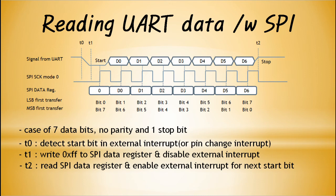When an interrupt occurs at T0, 0xFF is written to the SPI data register. Disable the external interrupt or pin change interrupt until transmission is completed. Writing 0xFF to the SPI data register has no effect because the UART RX pin connected to the MOSI pin maintains the idle state — logical high. Since SPI performs both write and read simultaneously, it also samples the SPI MISO signal connected to the UART TX pin. If 0xFF is written to the SPI data register at T0, sampling starts from that point after half a cycle of SPI SCK. Wait until SPI data transfer is complete at T2, then enable the external interrupt or pin change interrupt and prepare to receive the next start bit.